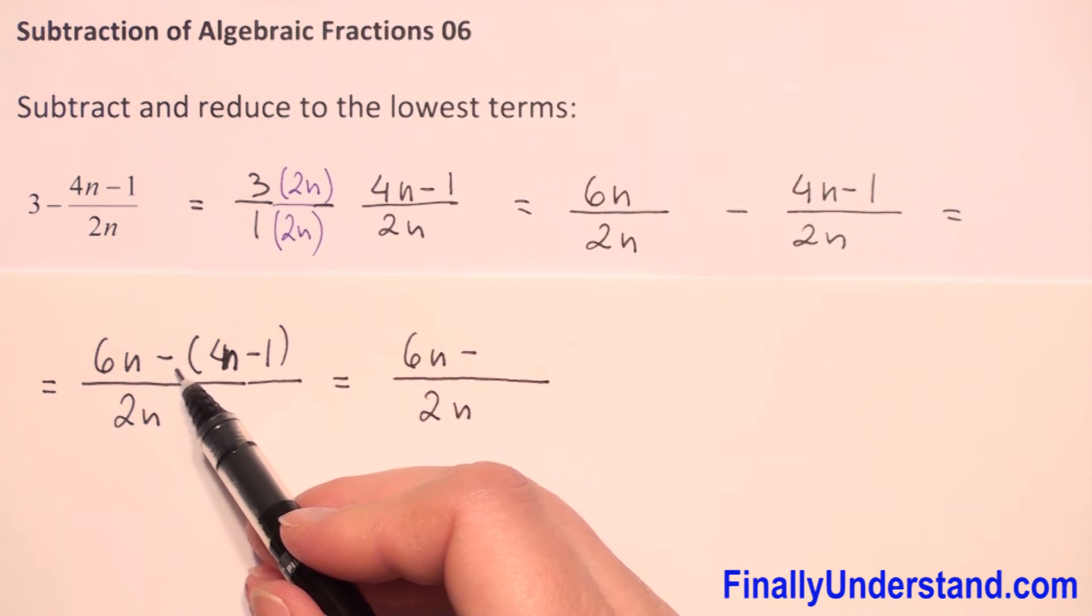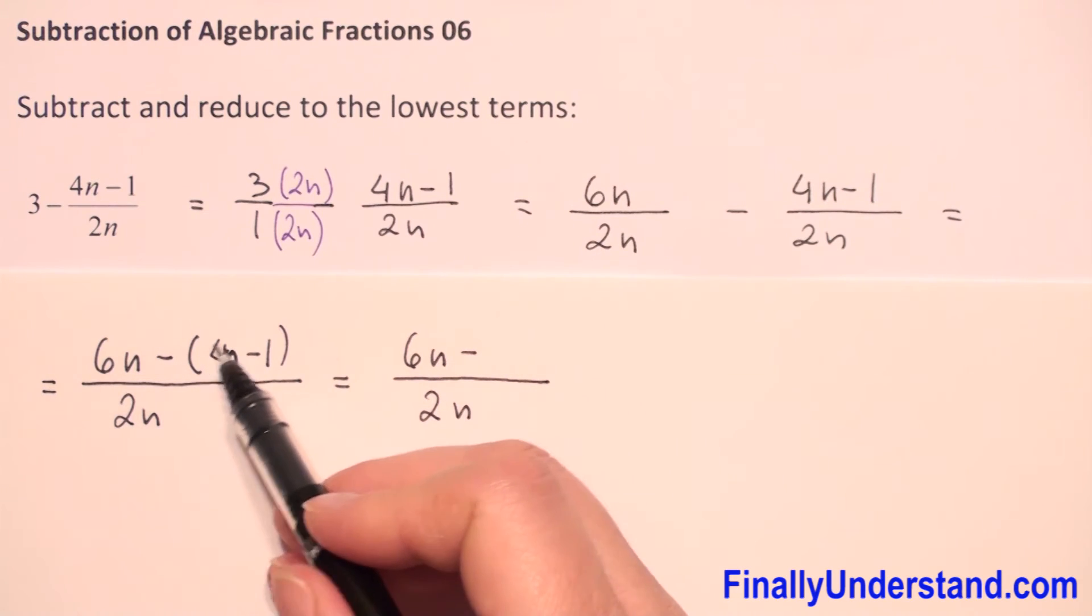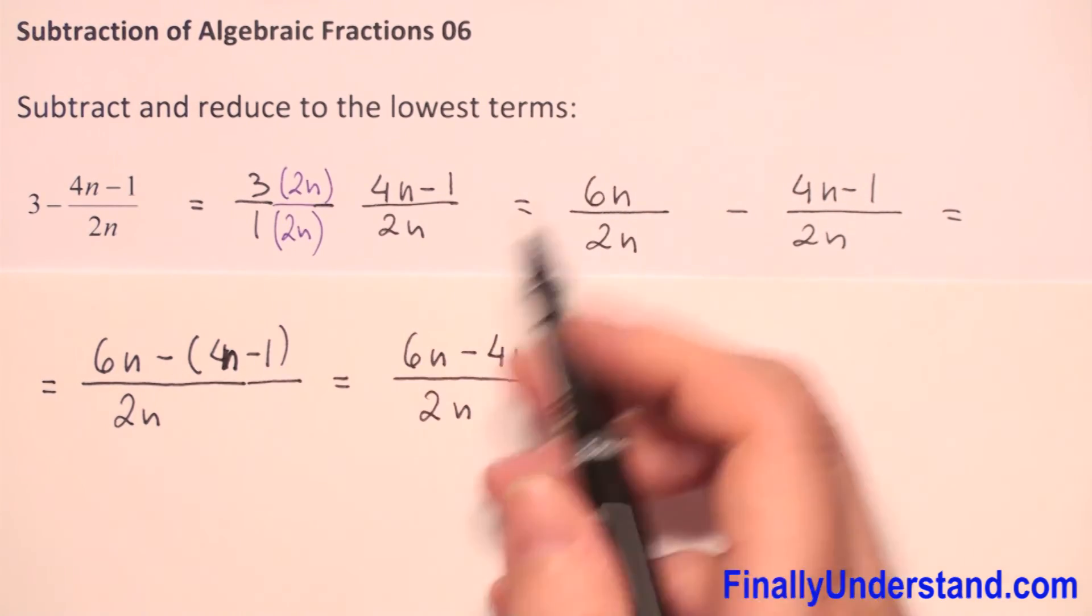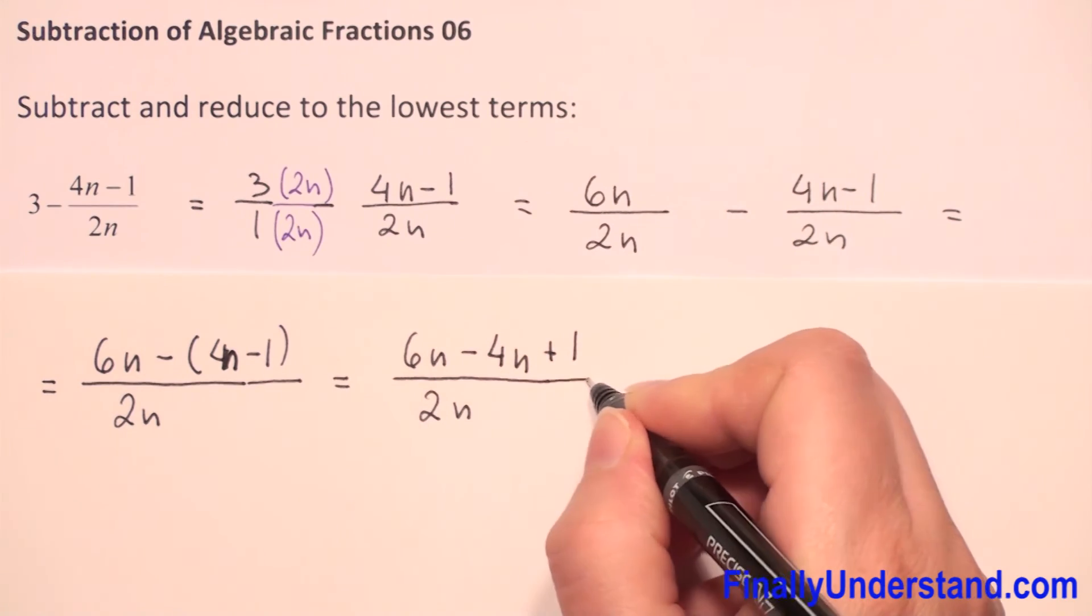Before the parenthesis we have a negative sign so we have to change the signs in the parenthesis. Positive 4n becomes negative 4n because positive and negative give negative. Negative and negative give positive, so we have positive 1.